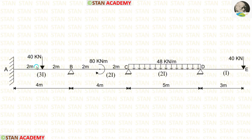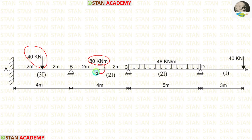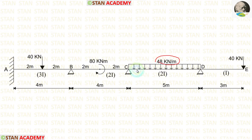In span AB, there is a point load of 40 kN acting at the center. In span BC, there is a concentrated moment of 80 kN·m acting in the clockwise direction. In span CD, there is a uniformly distributed load of 48 kN per meter acting for the full span.